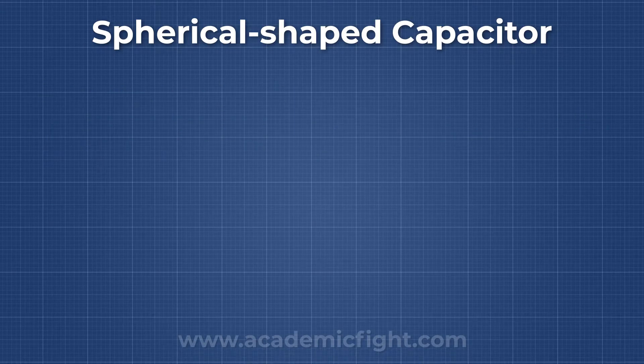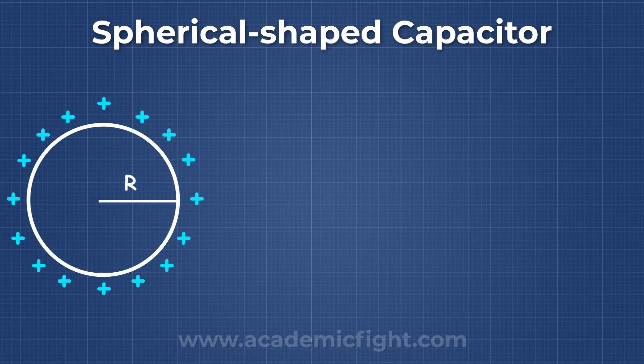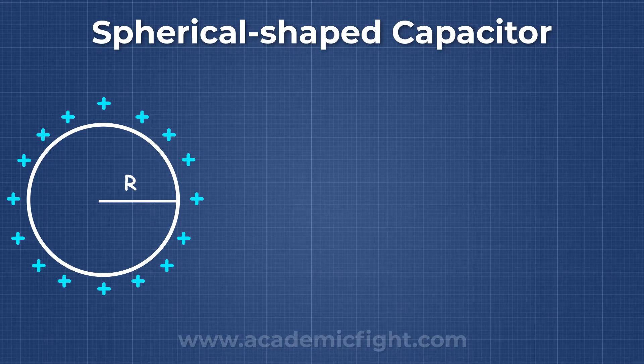Let's say we have a sphere with a radius R. Now we also know that whatever charge we give to this sphere, it will reside only on the surface. Let's say we give it a charge Q.